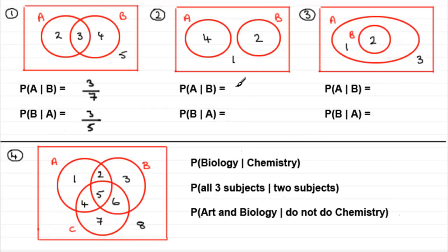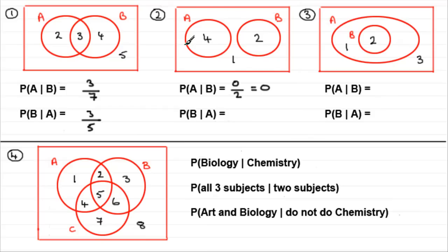Let's see if you got these right. Probability that someone does art given that they do biology: we know they do biology, so that's out of two people. But how many of those biology people do art? None of them. So it's zero. For the probability someone does biology given that they do art: we know they do art, so that's out of four. But none of the four people doing art do biology. So it's none out of four — zero.